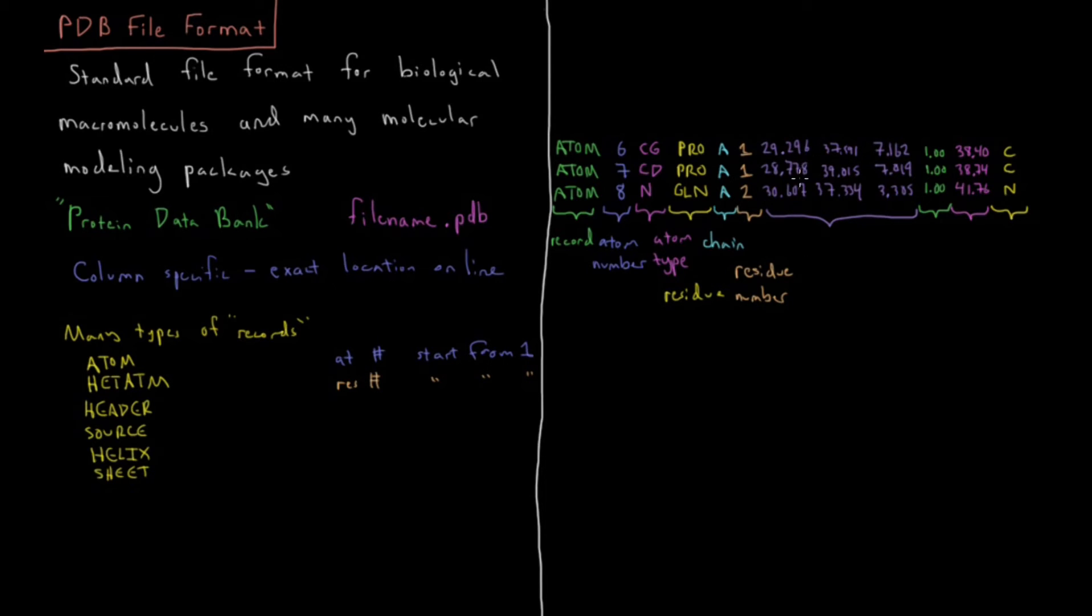Then we have the part that we would have in the X, Y, Z file from the previous video. These are X, Y, Z coordinates. Same thing as before, values are typically in Angstroms.